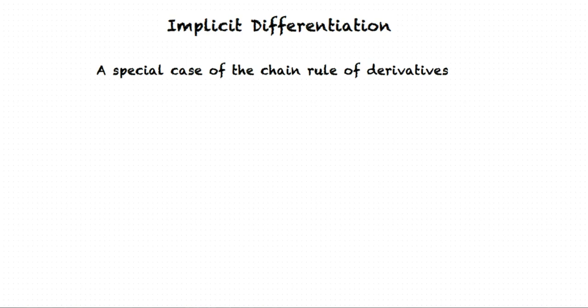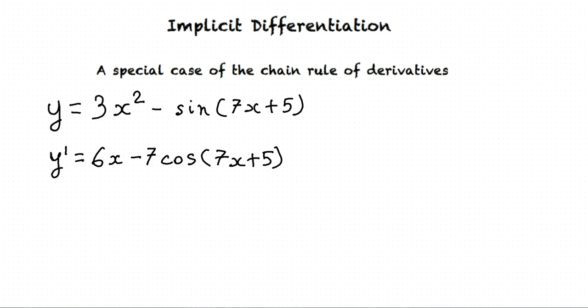Can we do an example to make it more clear? Yes, sure. The majority of differentiation problems involve functions y written explicitly as functions of x. For example, if y equals 3x squared minus sine of 7x plus 5, then the derivative of y is y prime equals 6x minus 7 cos of 7x plus 5.